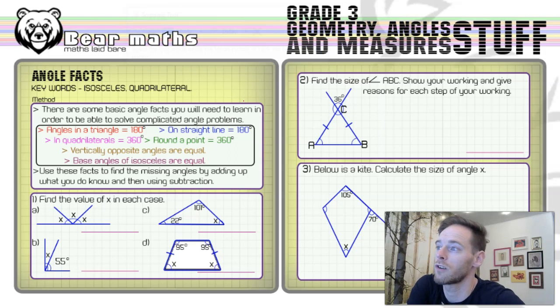A quadrilateral is a four-sided shape. There are some basic angle facts that you will need to learn in order to be able to solve more complicated angle problems. These are the angle facts in this box.